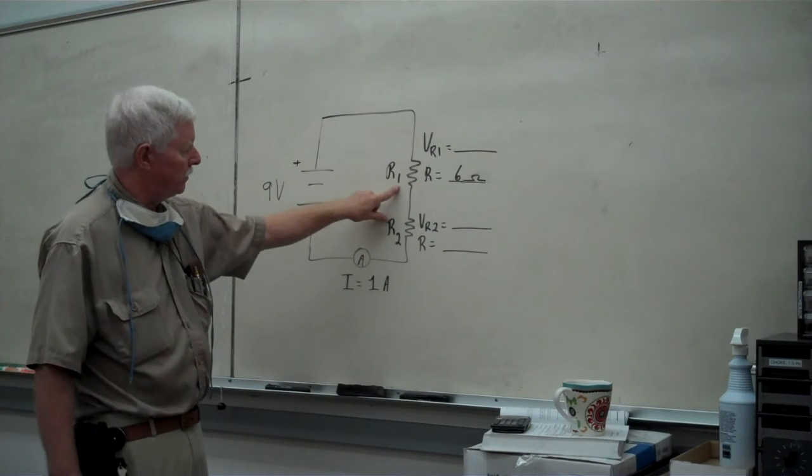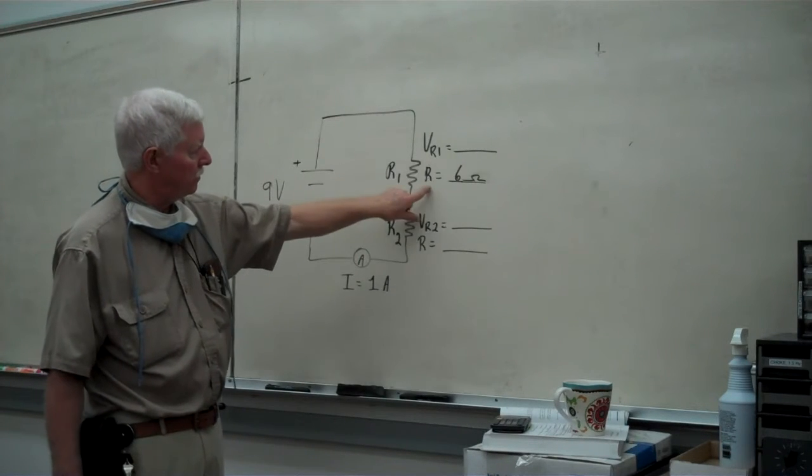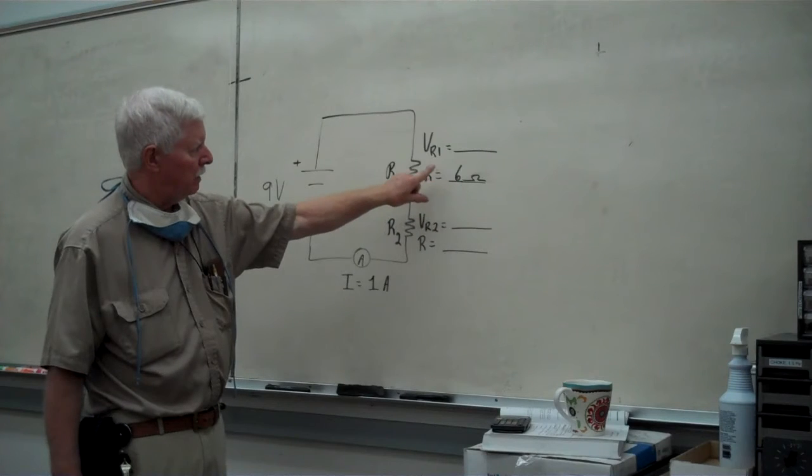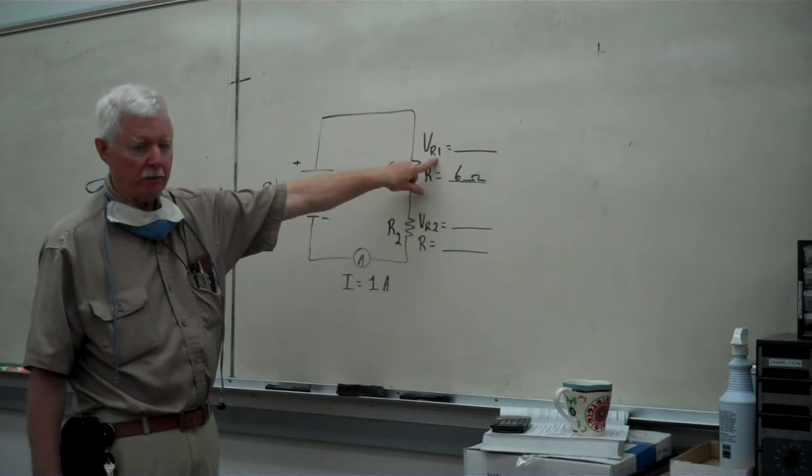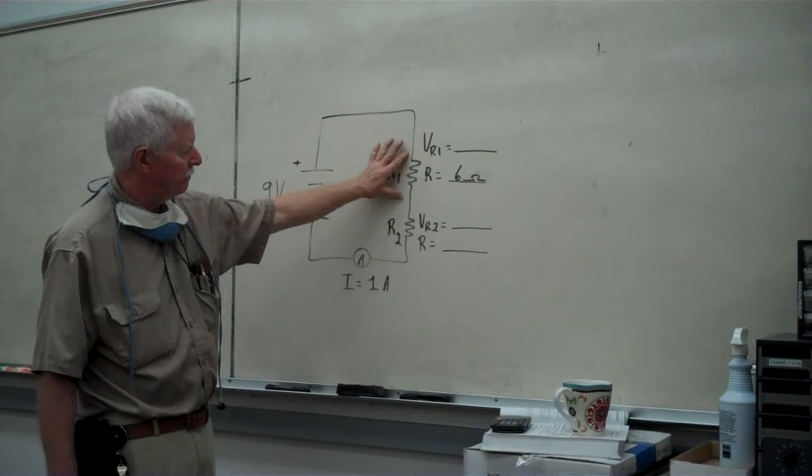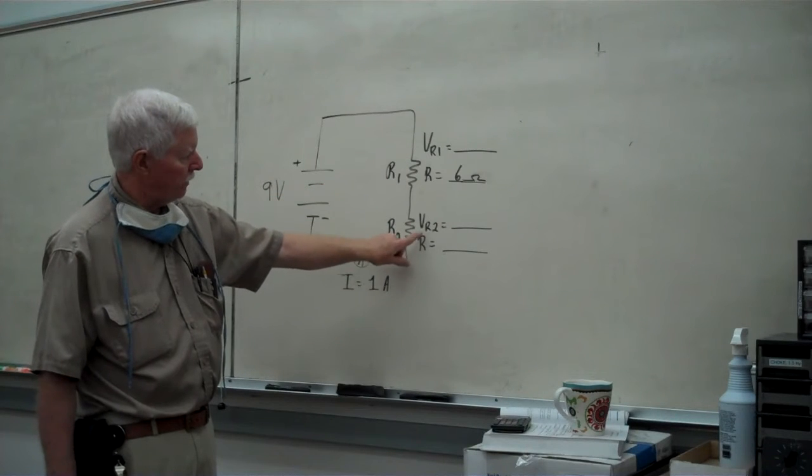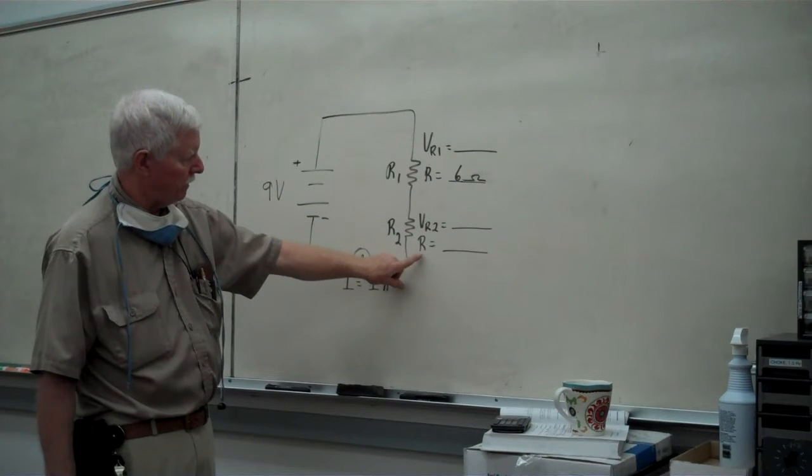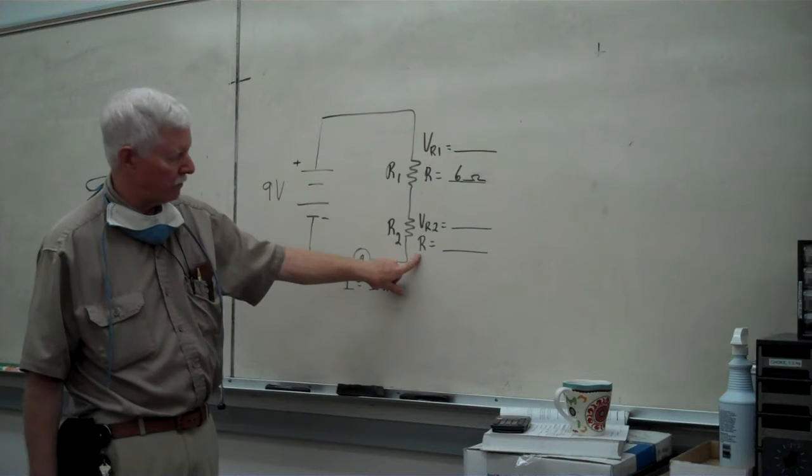For example, in this first resistance, see that it has a resistance of 6 ohms, but we don't have any voltage that we know should be across this. In the second example, we have a voltage that's unknown, and we don't know what the value of the resistance is.